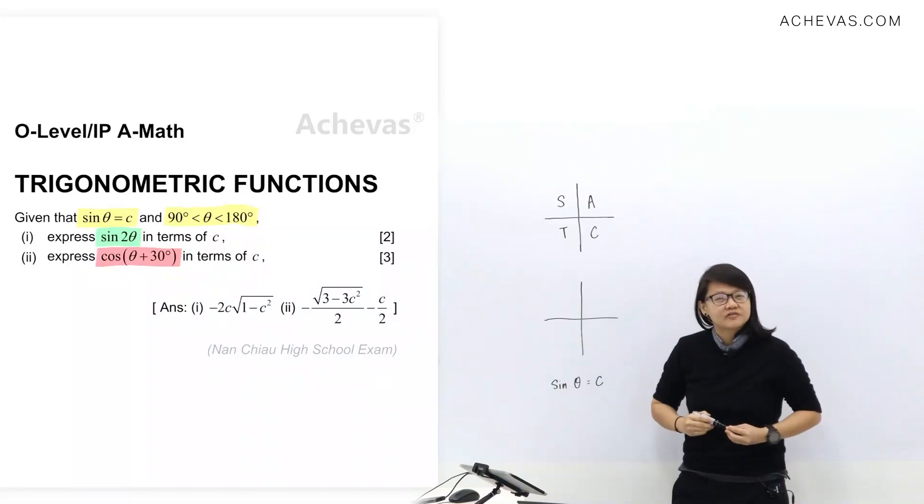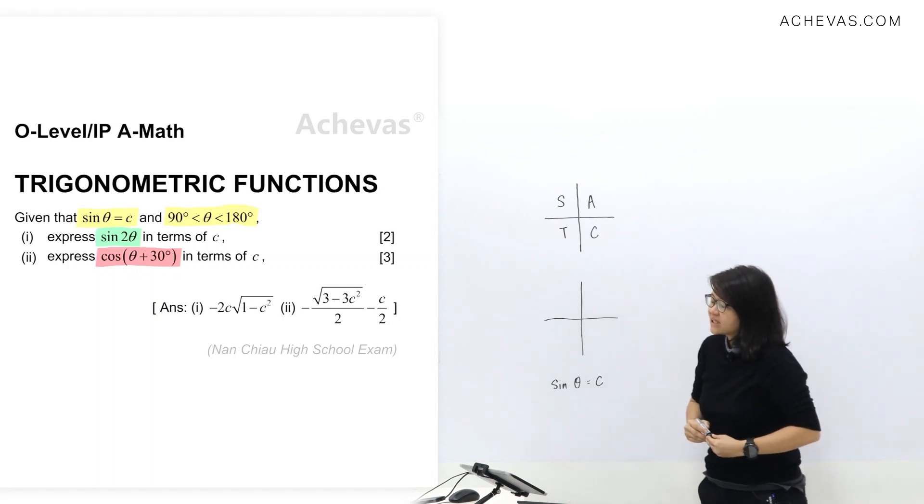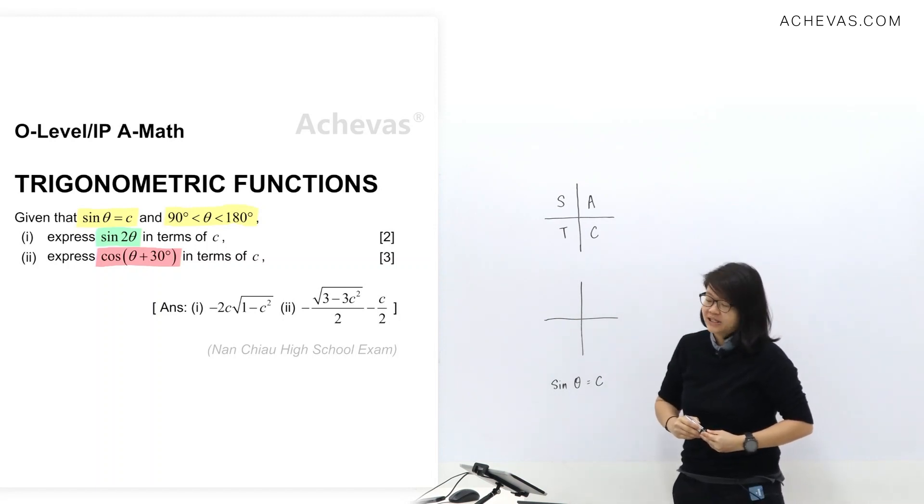Let's take a look at a trigonometric function question from Nan Chiao Hai. We are given that sine theta equals c, and theta is between 90 to 180.